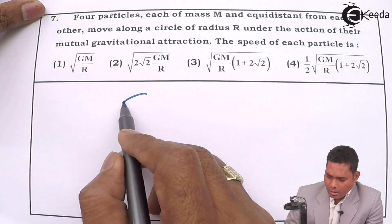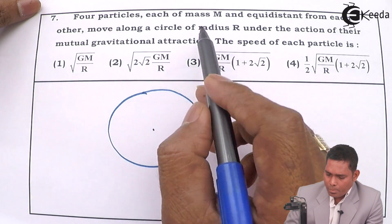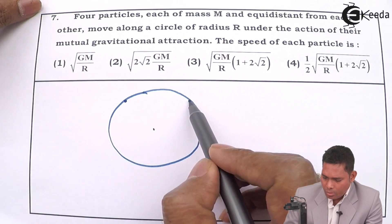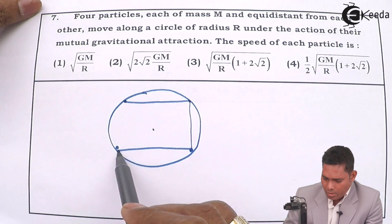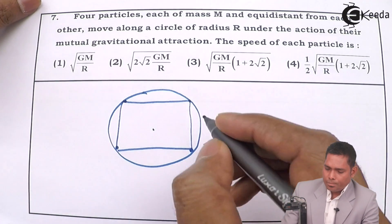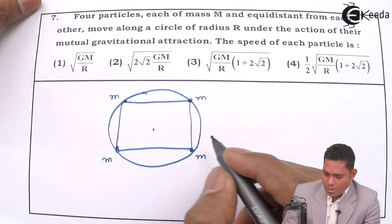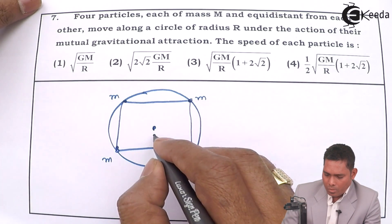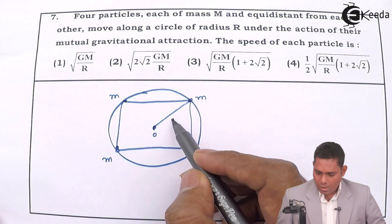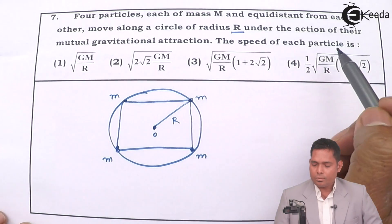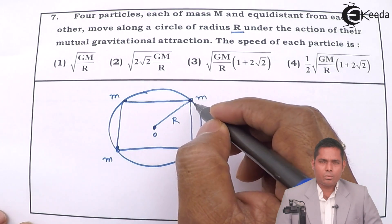There is a circle and here we have four particles placed equidistant from each other — one, two, three, and four. Each particle has mass M, the center is O, and the radius is R. They are moving in a circle under the action of their mutual gravitational force of attraction.